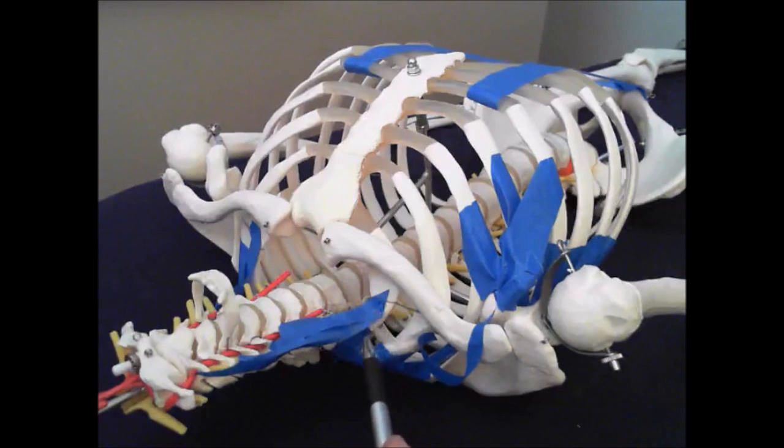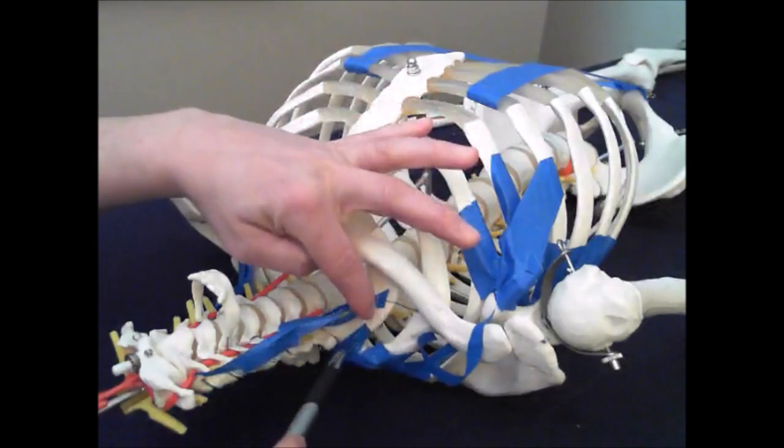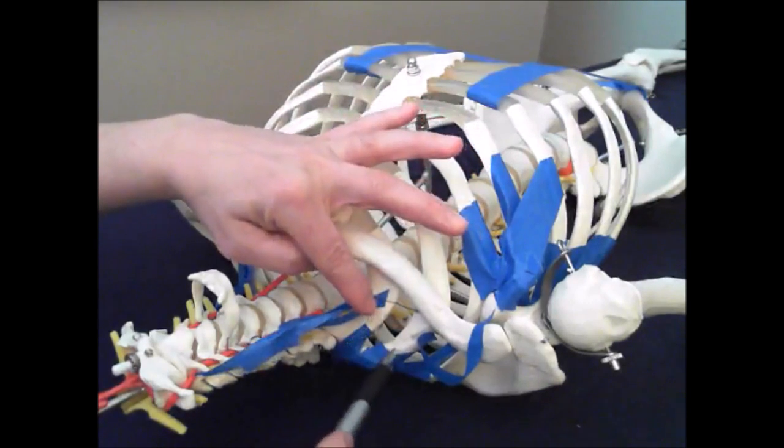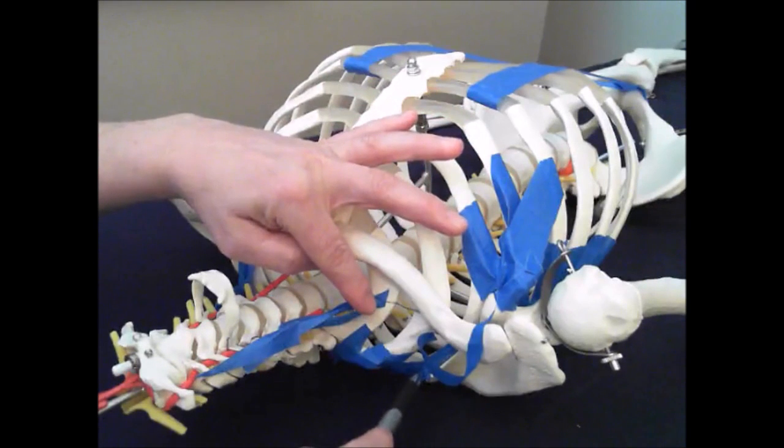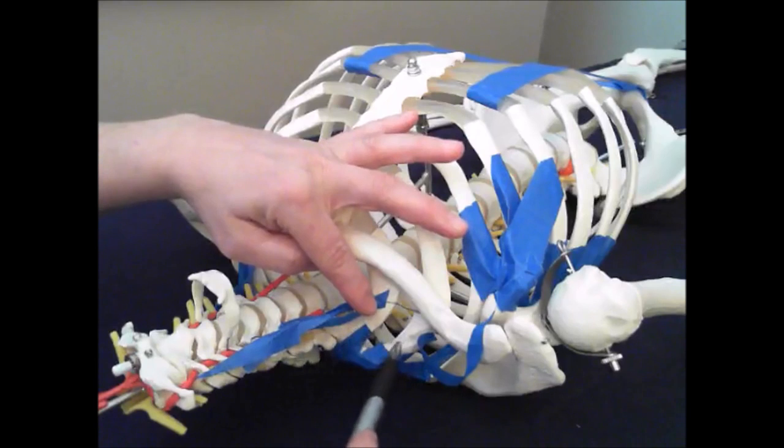The significance of this is the serratus anterior actually attaches to the first, second, third ribs directly underneath where the scalenes actually attach.